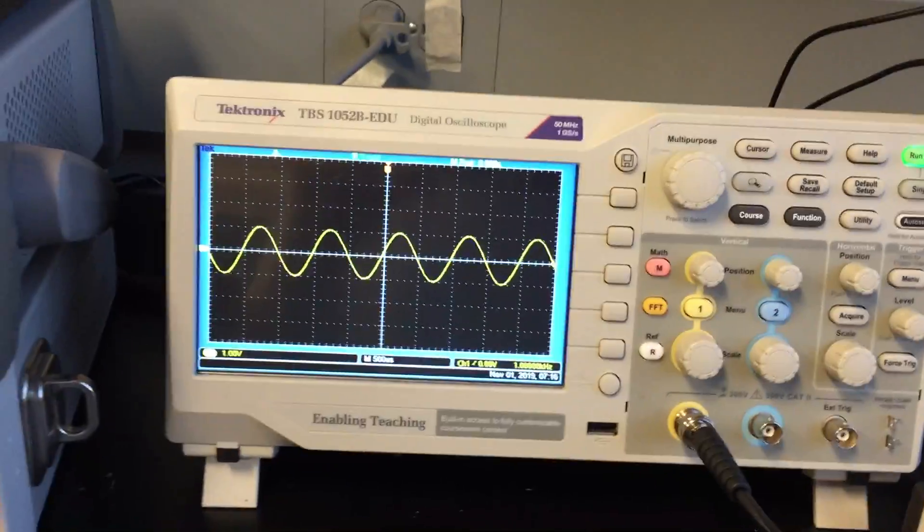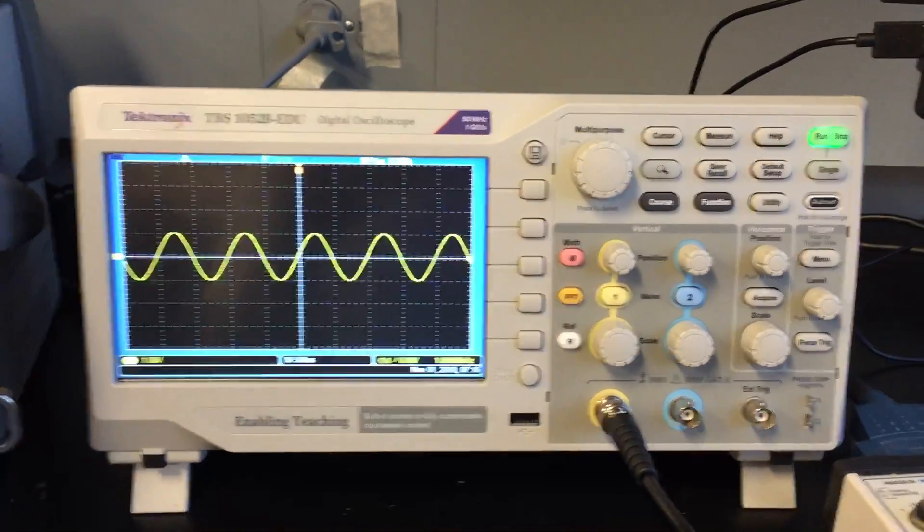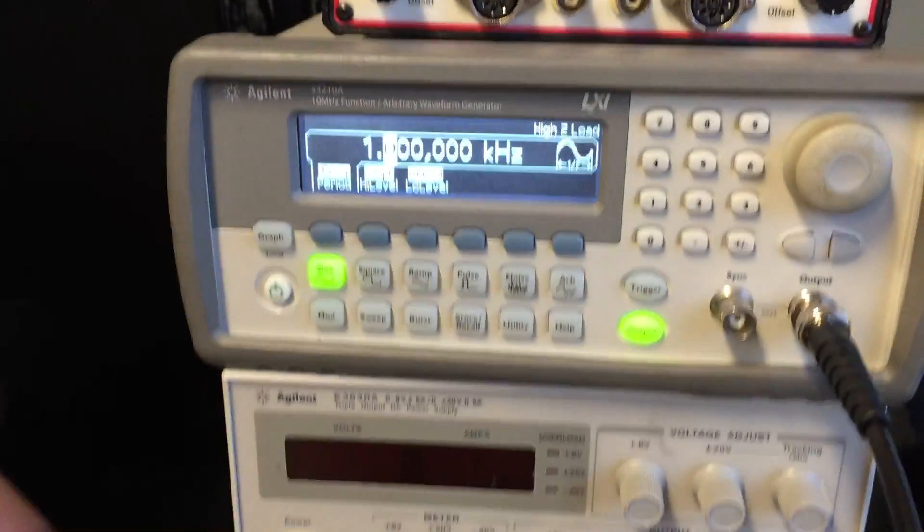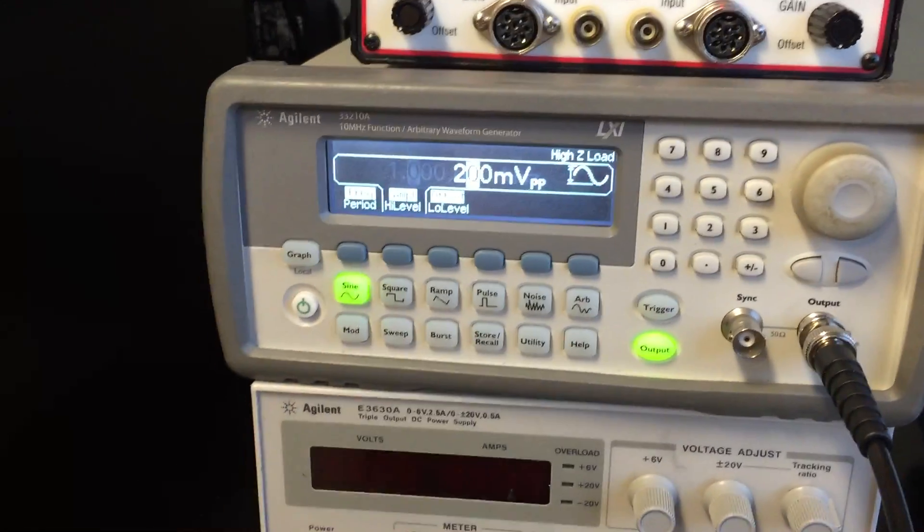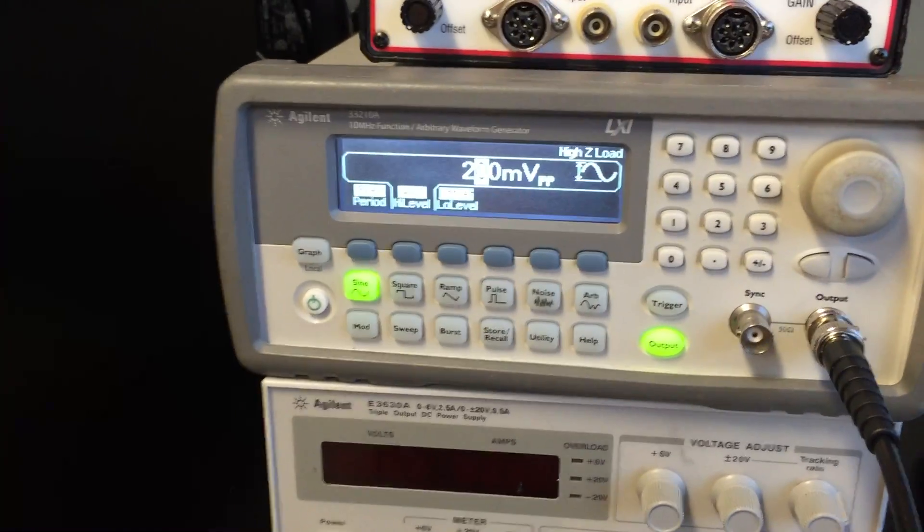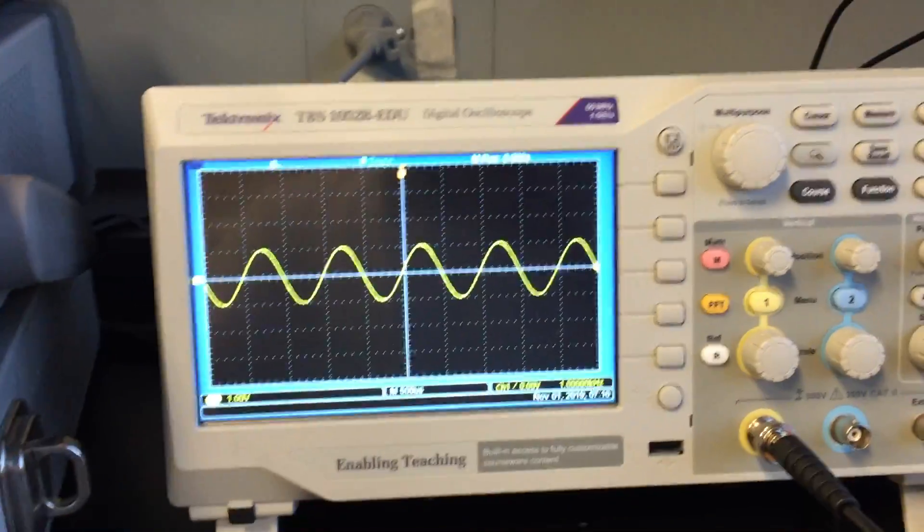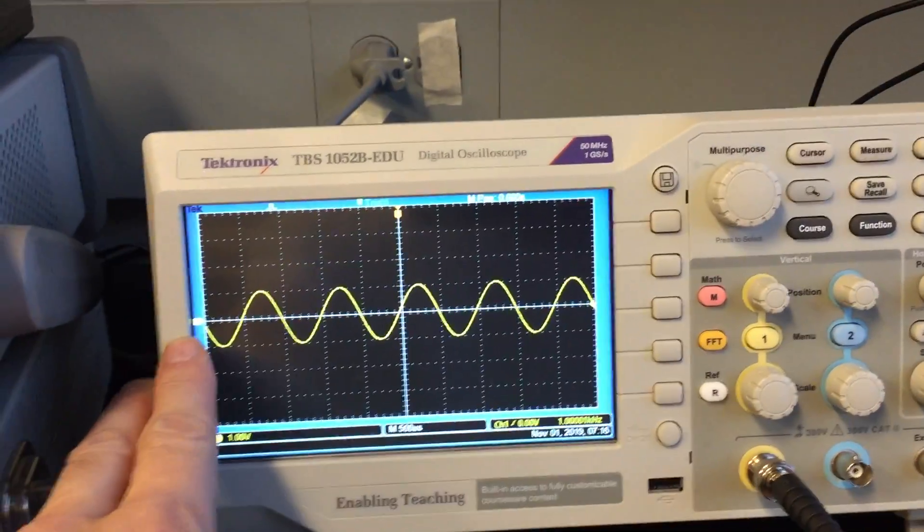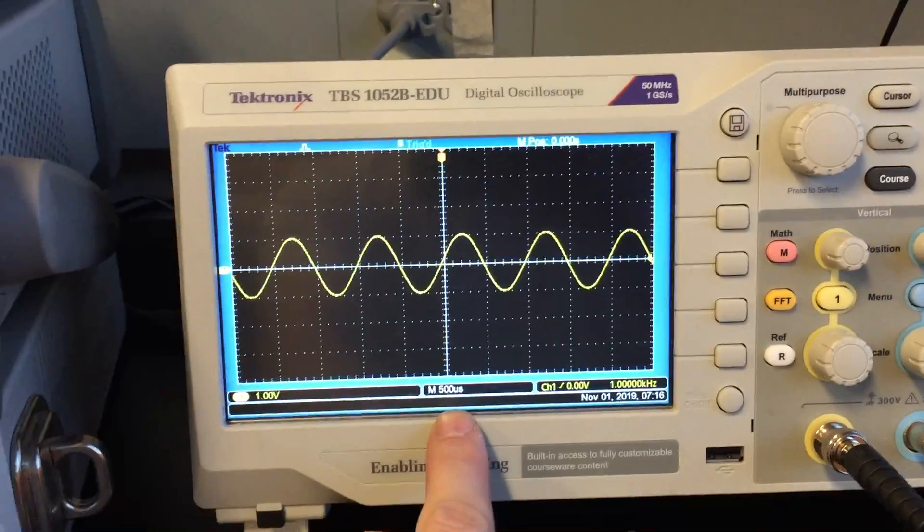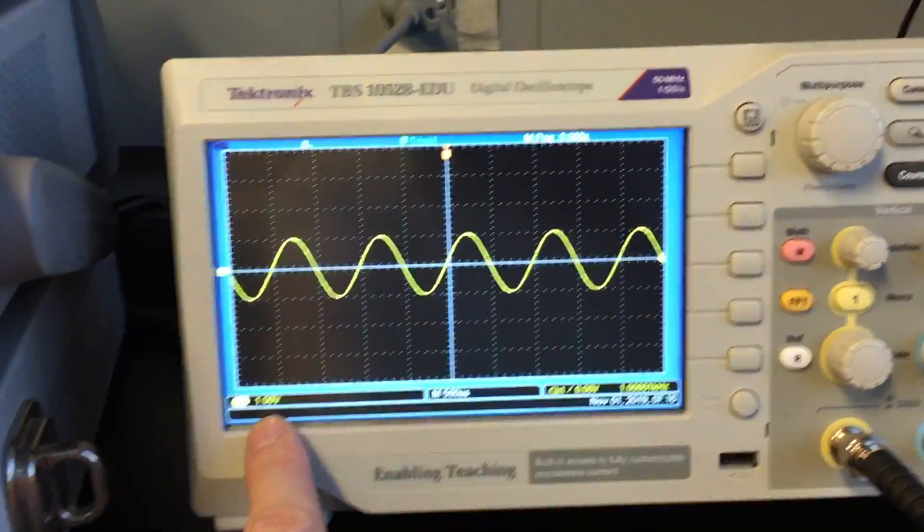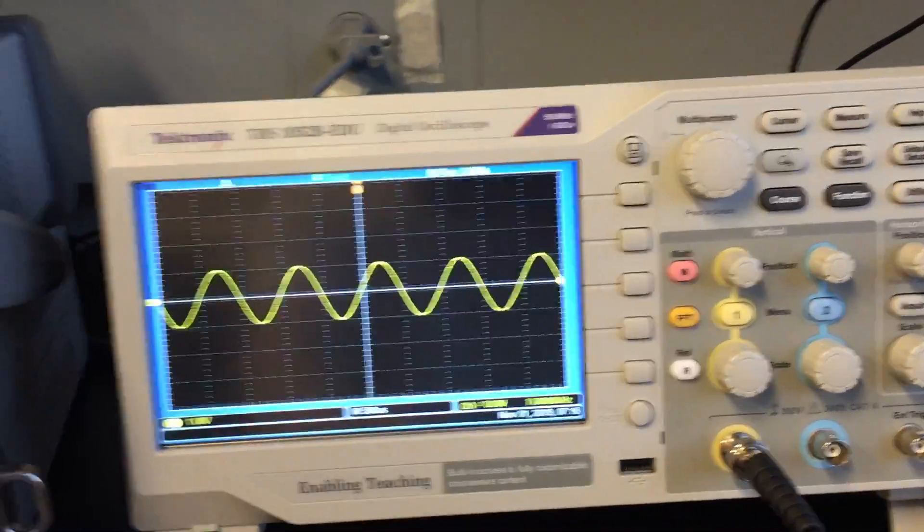So it turns out that the oscilloscope default is kind of set up so that if you have a one kilohertz sine wave in the millivolt range, it'll display it on the scope. There's no DC offset on there. It's set to 500 microseconds per division, one volt per division. So it works kind of right out of the box.